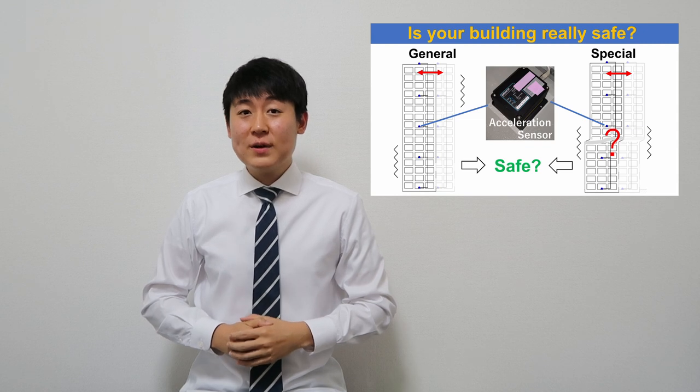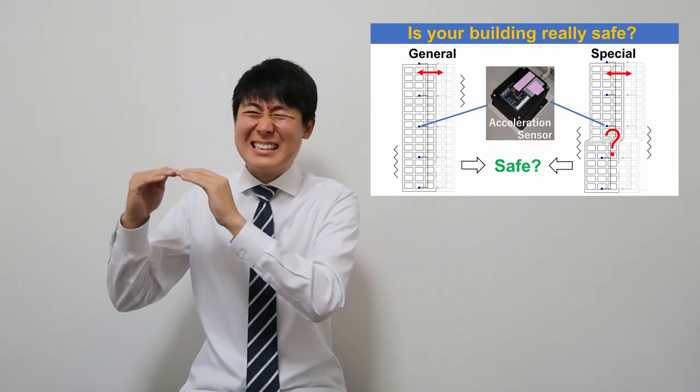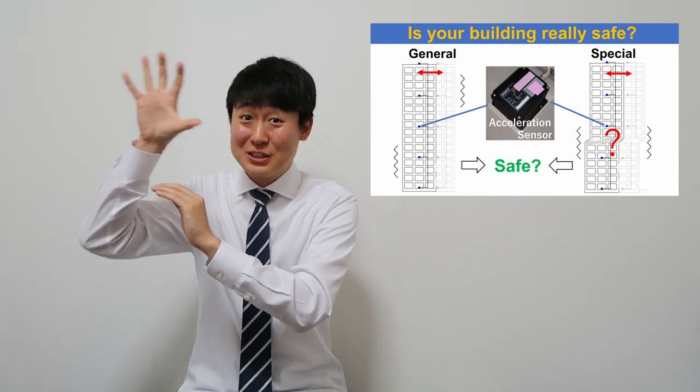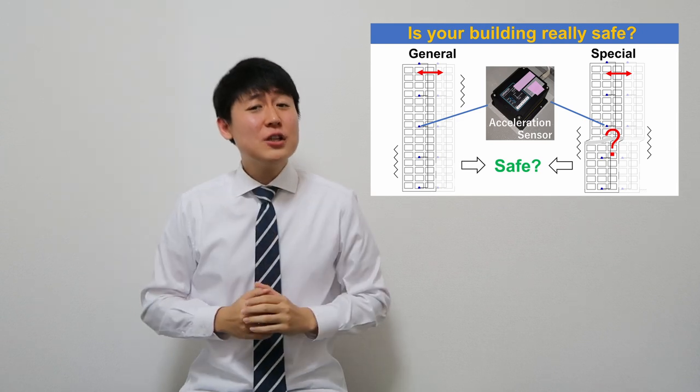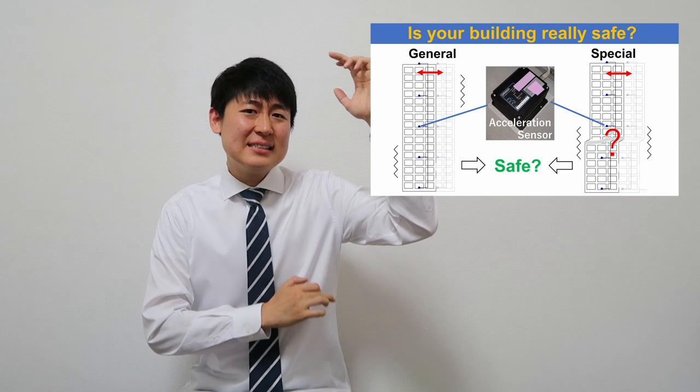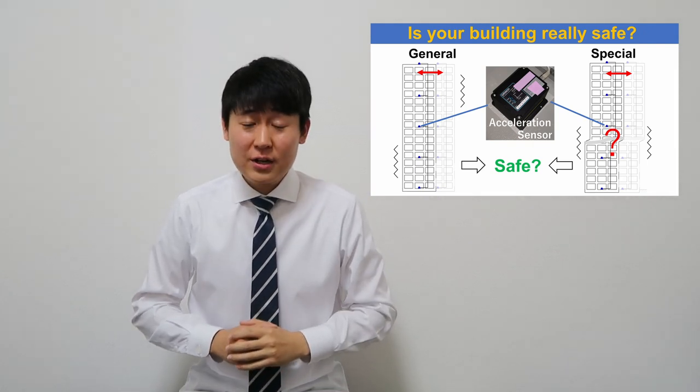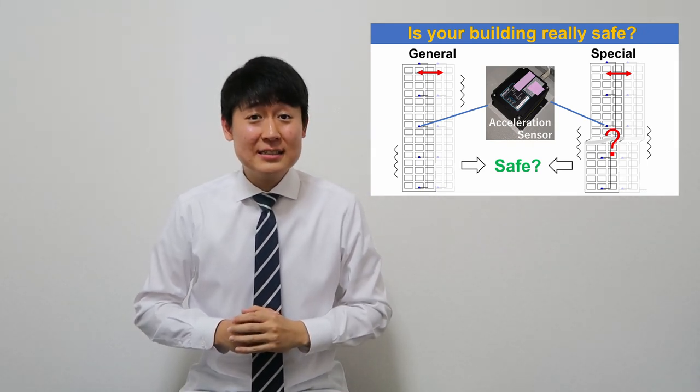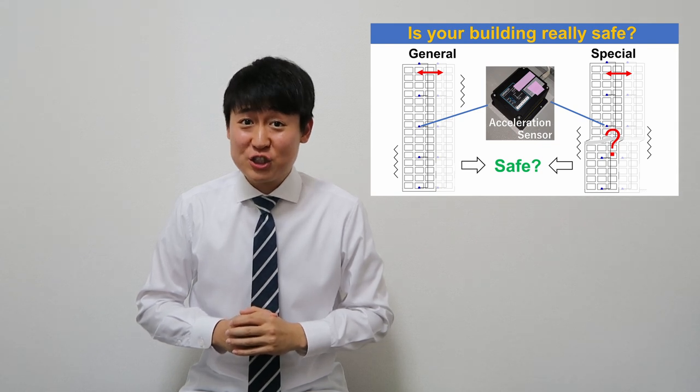This occurs when the characteristic of the floor is significantly different from the other floors. Imagine open wall-type parking lots or high-ceilinged spaces in the building or due to inadequacies in structural design or construction.